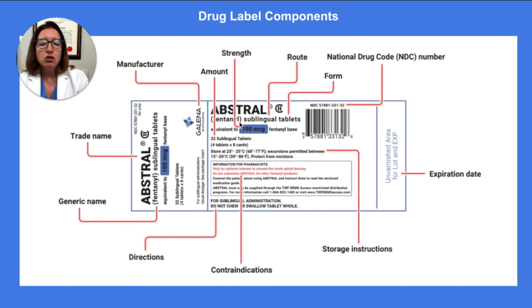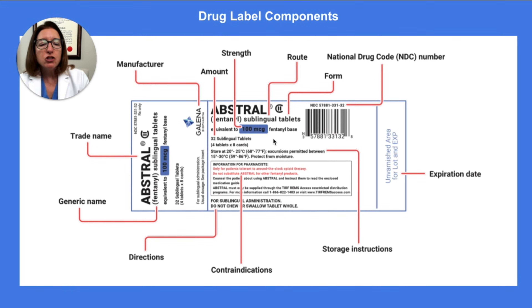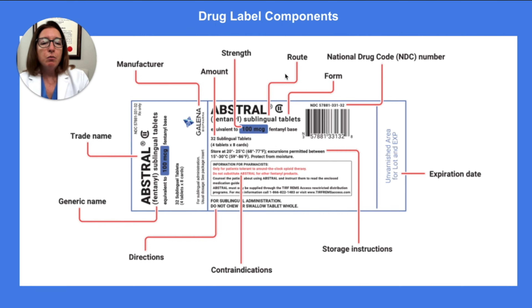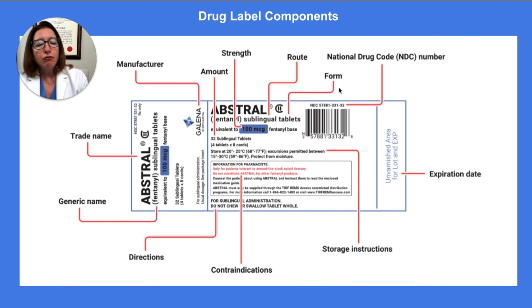Then we have the strength. This is a very important thing that you will need to find on a drug label. For each of the tablets, each tablet contains 100 micrograms of fentanyl. And then we have the route, which in this case is sublingual or under the tongue. We have the form, which is a tablet.